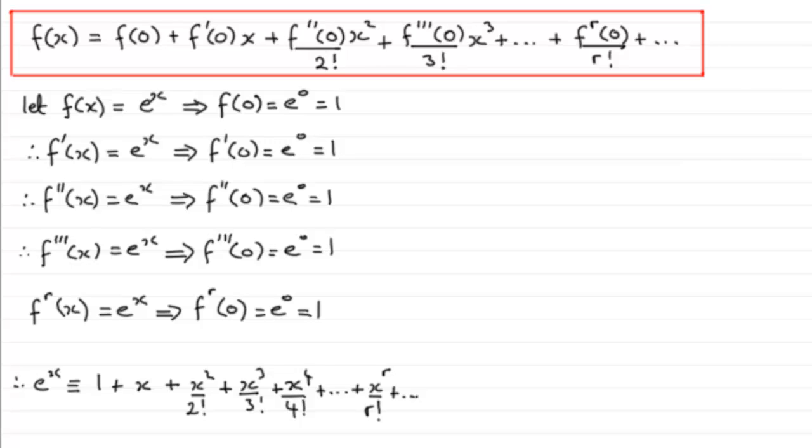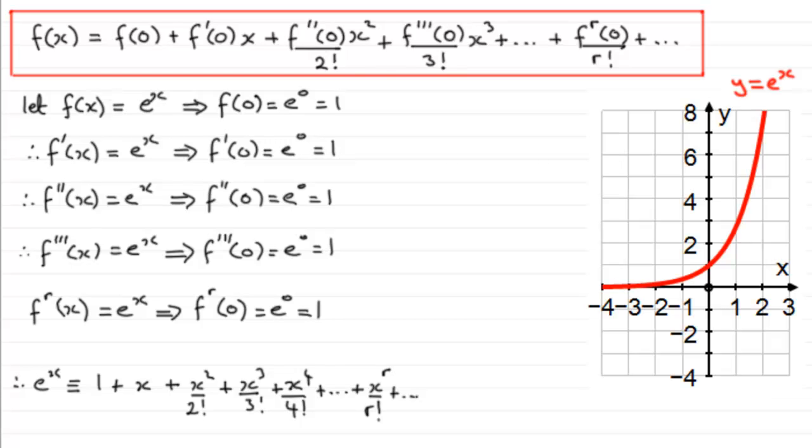If we were to draw the graph of e to the power x, it would look something like this crossing the y axis at one here. Now suppose we took the first two terms here, one plus x. Well if we were to draw the graph of y equals one plus x it's going to be this straight line here. Not very close at all to this graph here. Although the values around zero when x is zero they're going to be fairly close to e to the x. But you can see it differs quite a lot when you get outside that range.